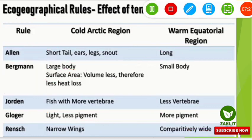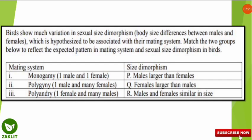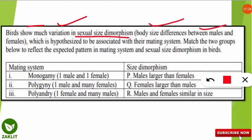The next question is again about birds and addresses the variation in sexual size dimorphism. Sexual size dimorphism refers to the body size difference between males and females. It is hypothesized to be associated with the mating system. We need to match two groups of mating systems with their corresponding size dimorphism patterns according to male and female body size.